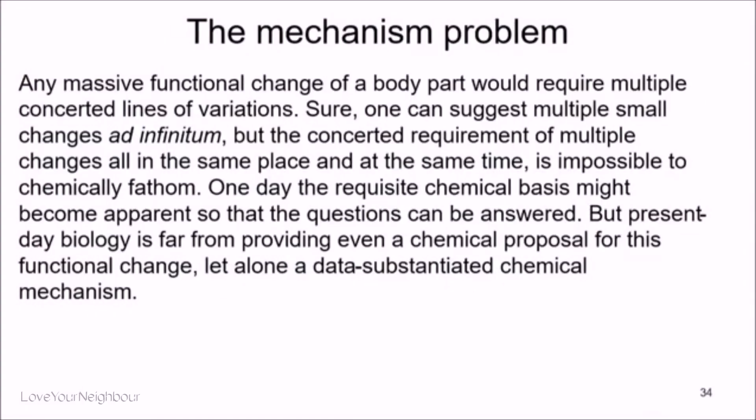We have no mechanisms for why our brains work so much differently than other hominids — chimpanzees and apes. We can't fathom the mechanism for body plan changes. Any massive functional change of a body part would require multiple concerted lines of variation. One can suggest small changes ad infinitum, but a concerted requirement of multiple changes all in the same place at the same time is impossible to chemically fathom. One day we might know — as of today we don't, but that doesn't mean we'll never know.